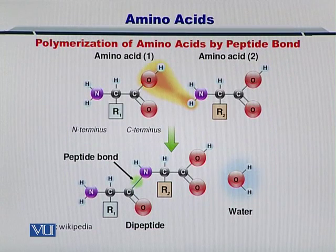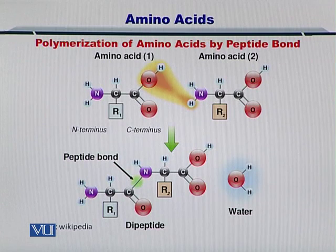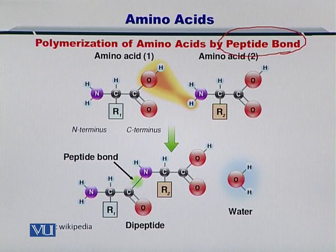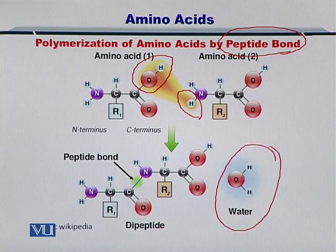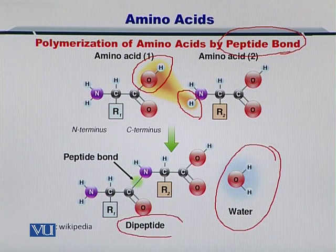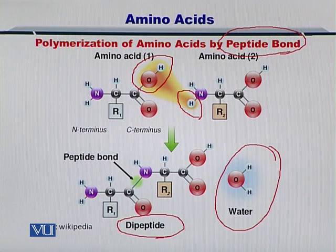How do two amino acids come together? As a result of the process in which a peptide bond is formed, as highlighted here, the C-term of one amino acid gets attached to the N-term of the other amino acid, and water is released in the process. The two amino acids come together to form a dipeptide. This is the polymerization of amino acids by formation of a peptide bond.